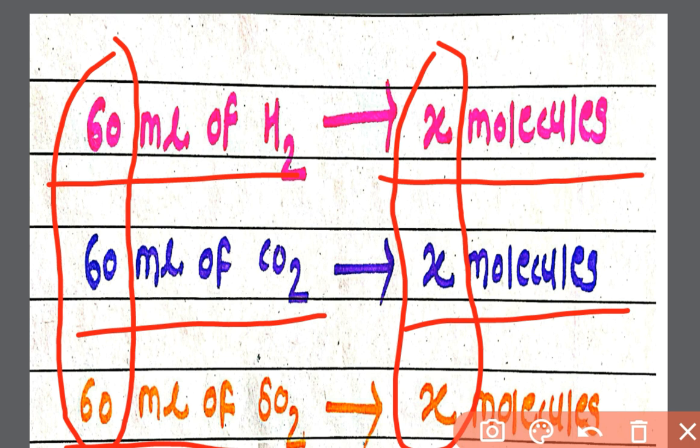Equal volume equals equal number of molecules. So in these 3 cases, volume is also the same: 60 ml of H2, 60 ml of CO2, 60 ml of CO2. When the volume is the same, the number of molecules is also the same.